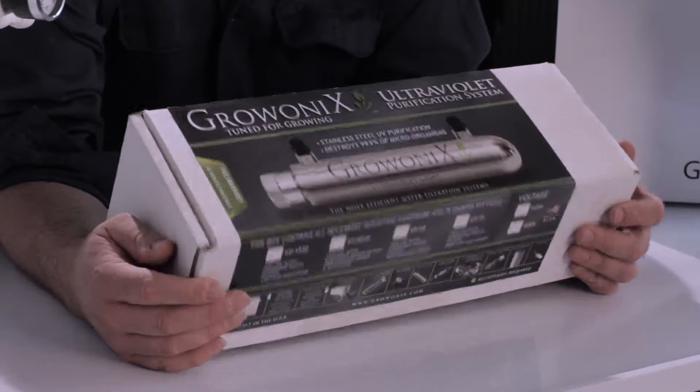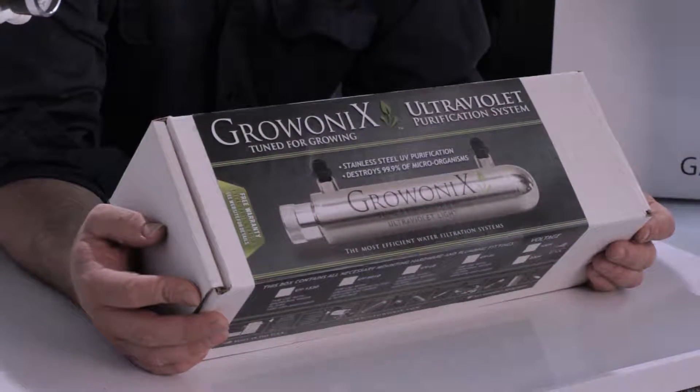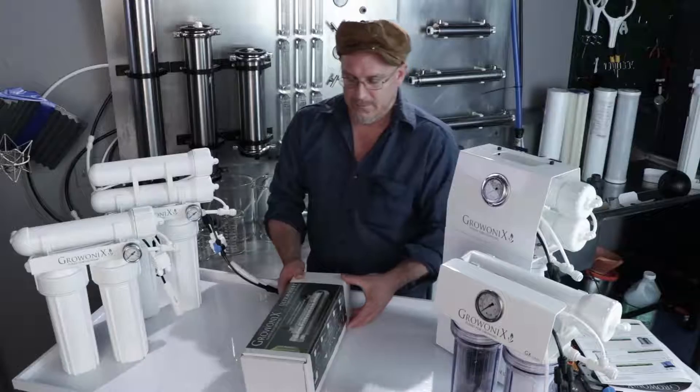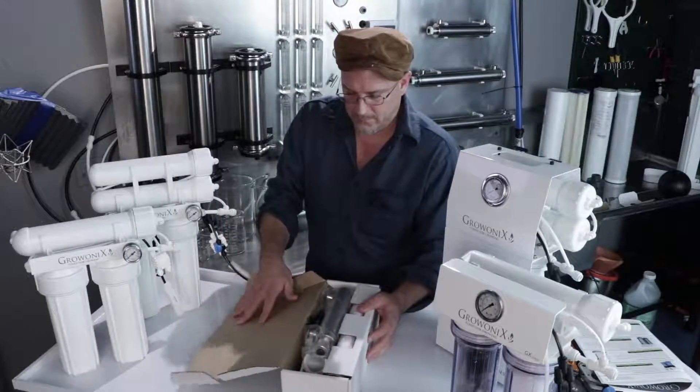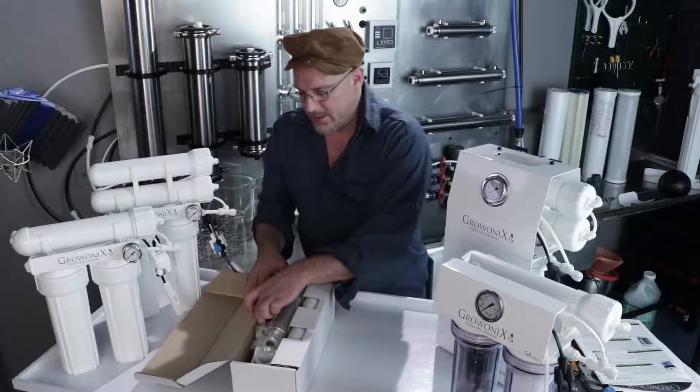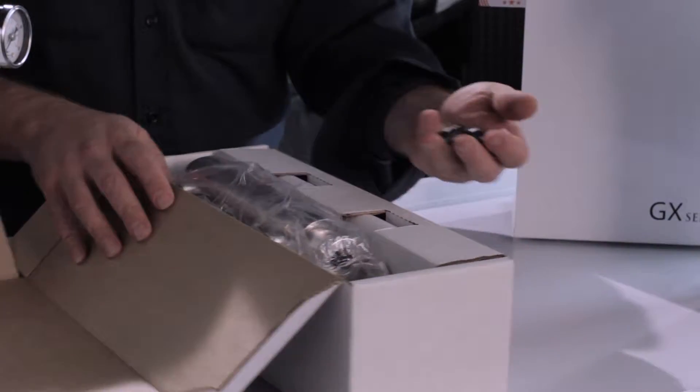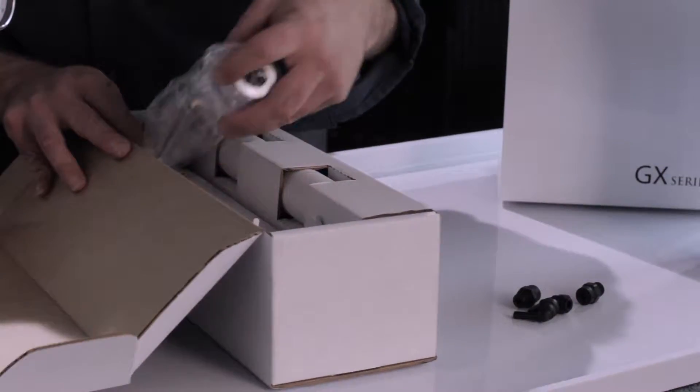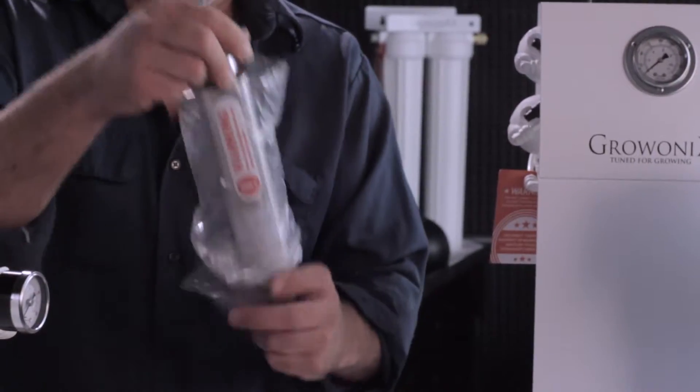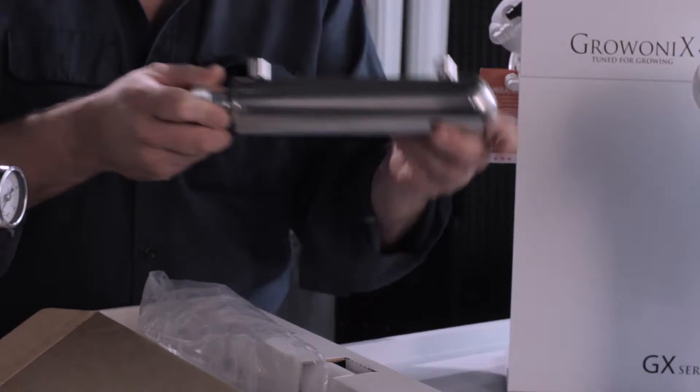This is a one gallon per minute stainless steel UV filter. Inside the box you're going to get some plastic quarter inch RO fittings for it. The UV body itself. Stainless steel.